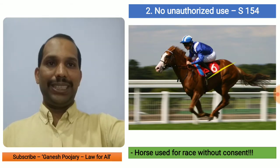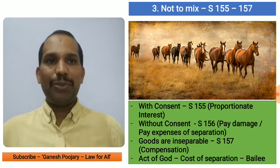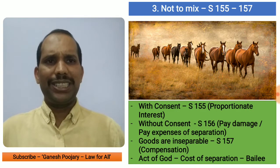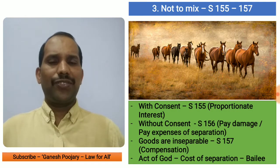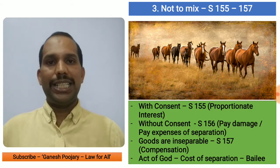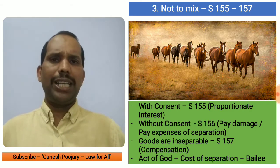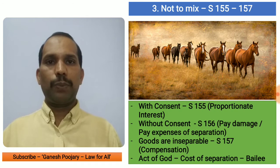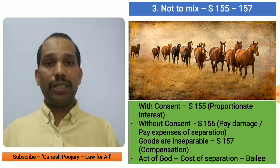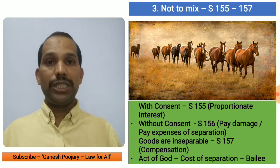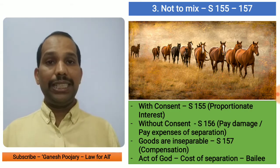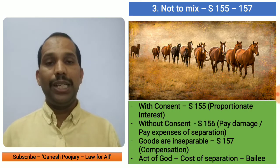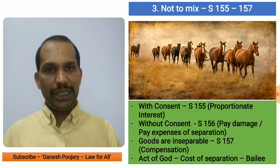The third duty is not to mix, covered under sections 155 to 157. A horse cannot be mixed with another horse and become unidentifiable, but imagine if rice or wheat or barley — some agricultural product — is mixed with another product of the same kind; you cannot separate it and it becomes very difficult to identify whose ownership is which. So it is clearly stated under sections 155 to 157 that the Bailee must not mix the Bailor's goods with his own, and must keep them separately.